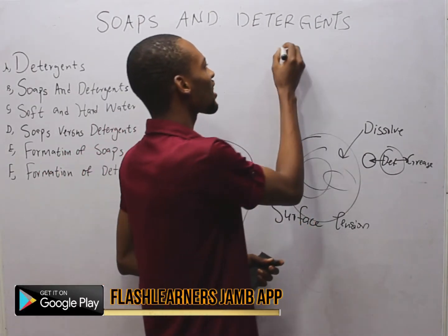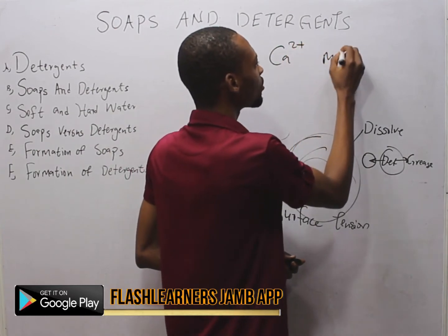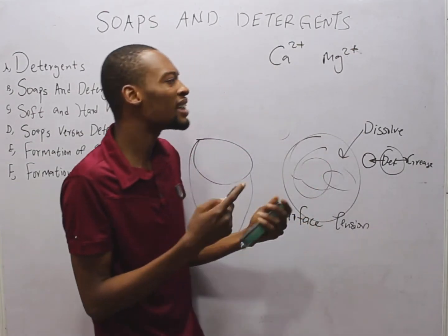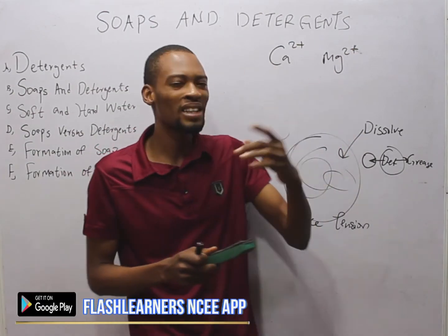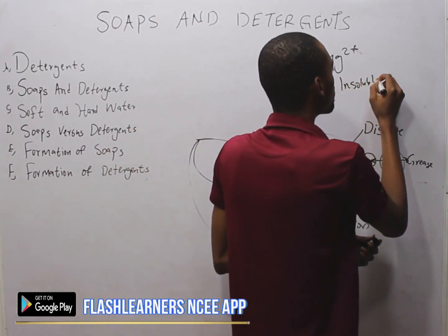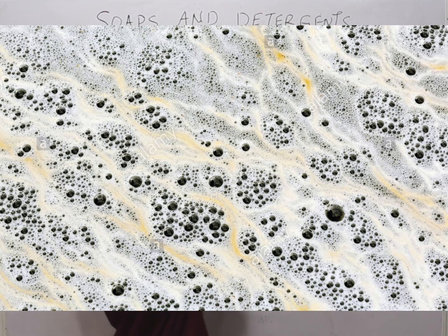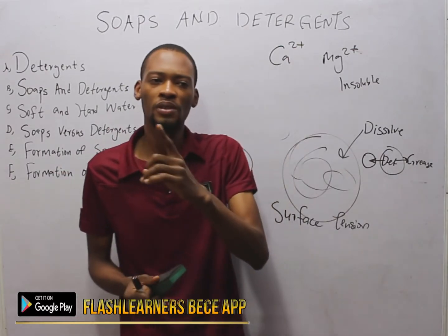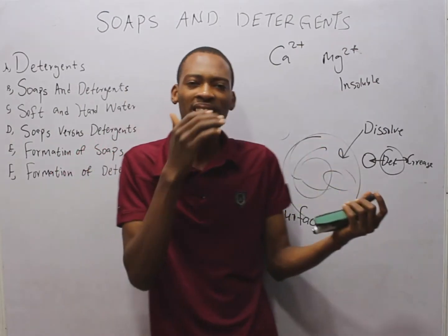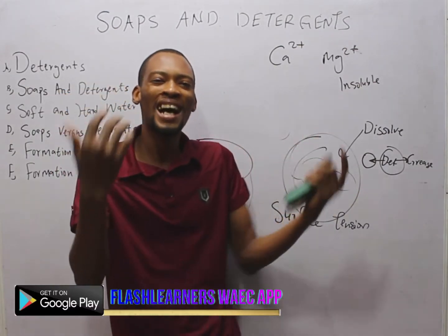Hard water contains calcium ions and magnesium ions. These ions react with molecules in soap to form calcium and magnesium salts, and these salts formed are insoluble. Therefore, they begin to form scum. Soaps form scum in hard water. Meanwhile, detergents react with calcium in hard water and form a soluble substance. This is why detergents foam easily — they foam with hard water.